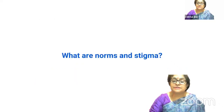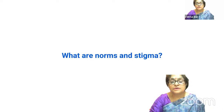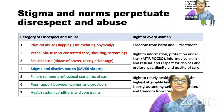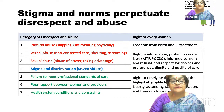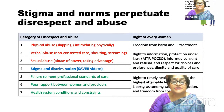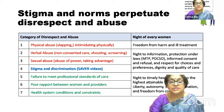Norms and stigma perpetuate disrespect and abuse. Categories of disrespect and abuse include physical abuse, verbal abuse, non-consented care, sexual abuse, abuse of power, stigma and discrimination, failure to meet professional standards of care, and health system conditions and constraints.